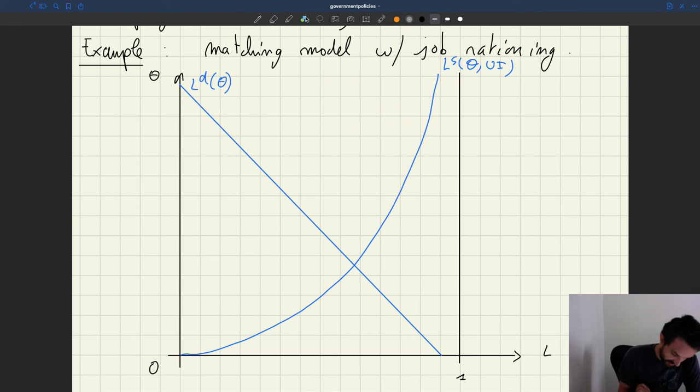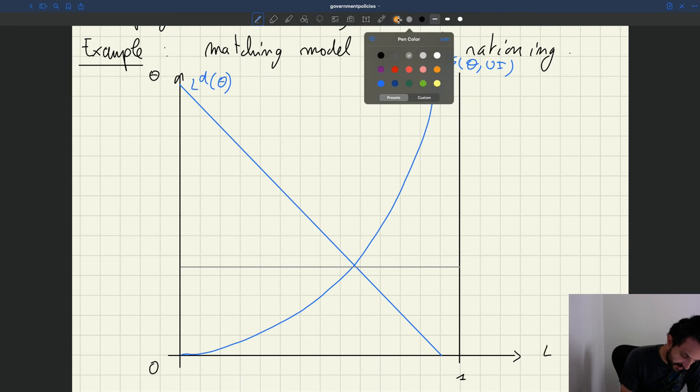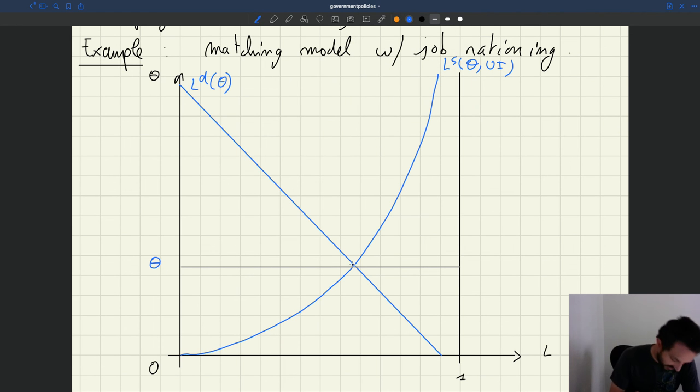Okay. Something that's important is to highlight actually the level of tightness here that we have. Okay, this is our equilibrium of tightness, this is our initial equilibrium, and this is employment.